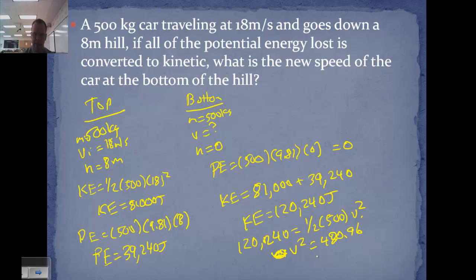So v squared 480.96. Take the square root. Get 21.96 meters per second.